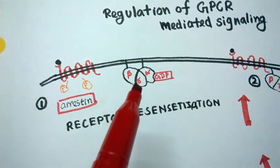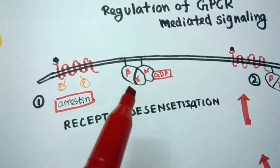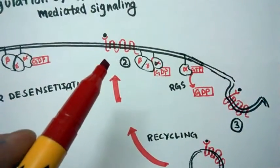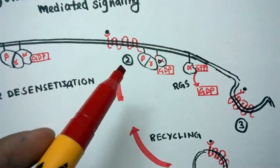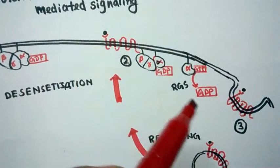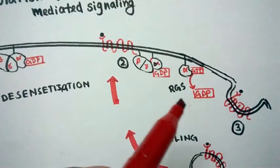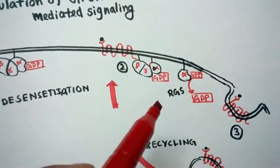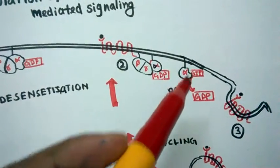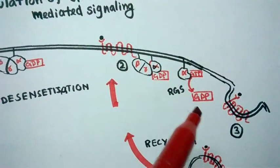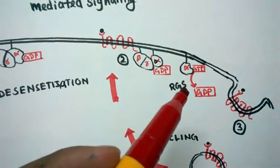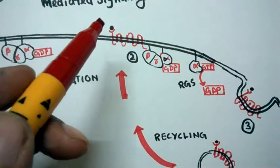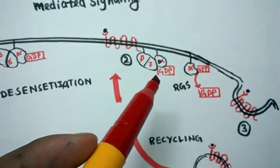The second mechanism is by RGS, or regulator of G protein signaling. What it does is it actually hydrolyzes the GTP into GDP, so it increases the GTPase activity. So in the second strategy, upon ligand binding the alpha subunit gets activated but further its activity is reduced by this RGS.